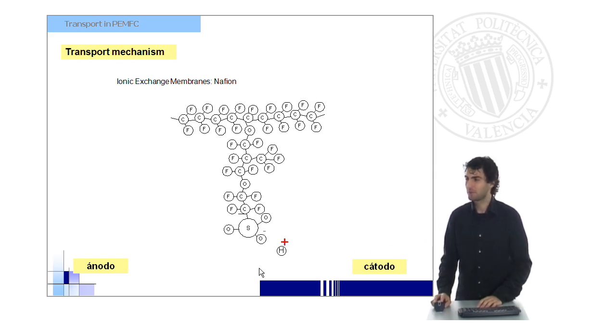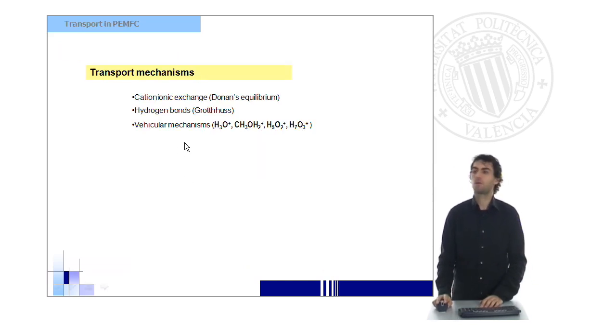In general, we could be talking about any kind of positive ions, any cation, but due to the characteristics of fuel cells, we will find a very high proton concentration, and then protons will be transferring from the anode to the cathode.